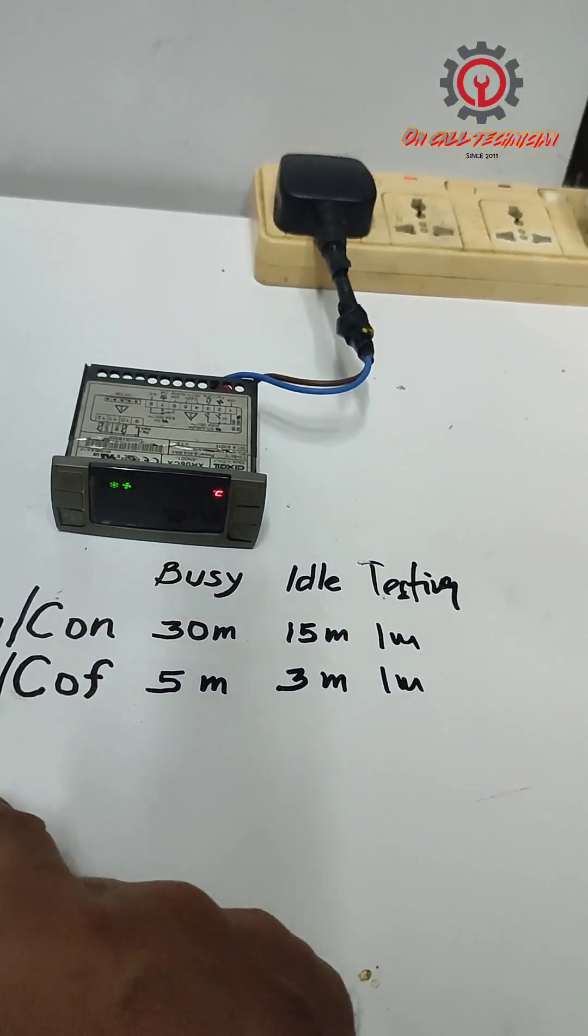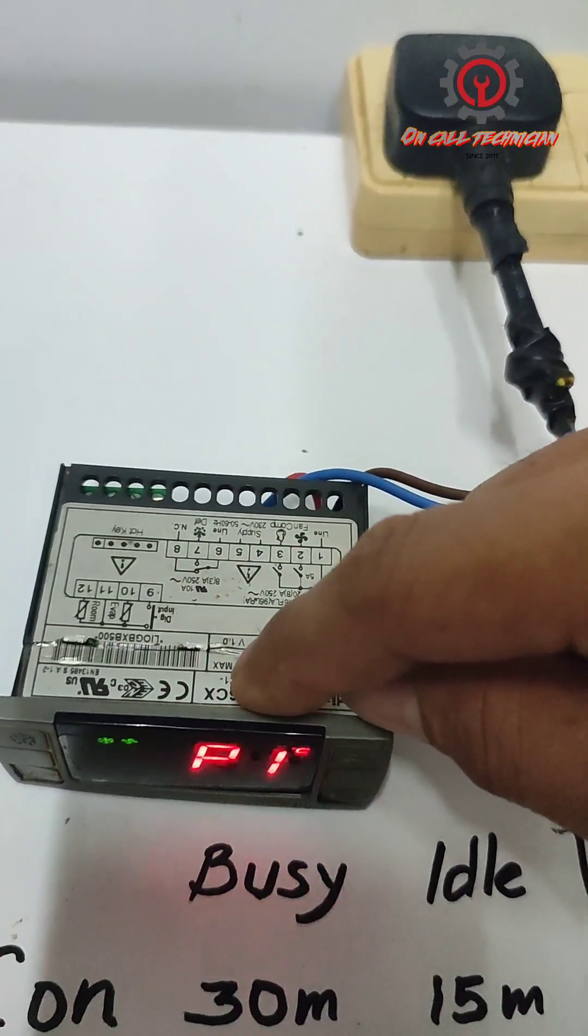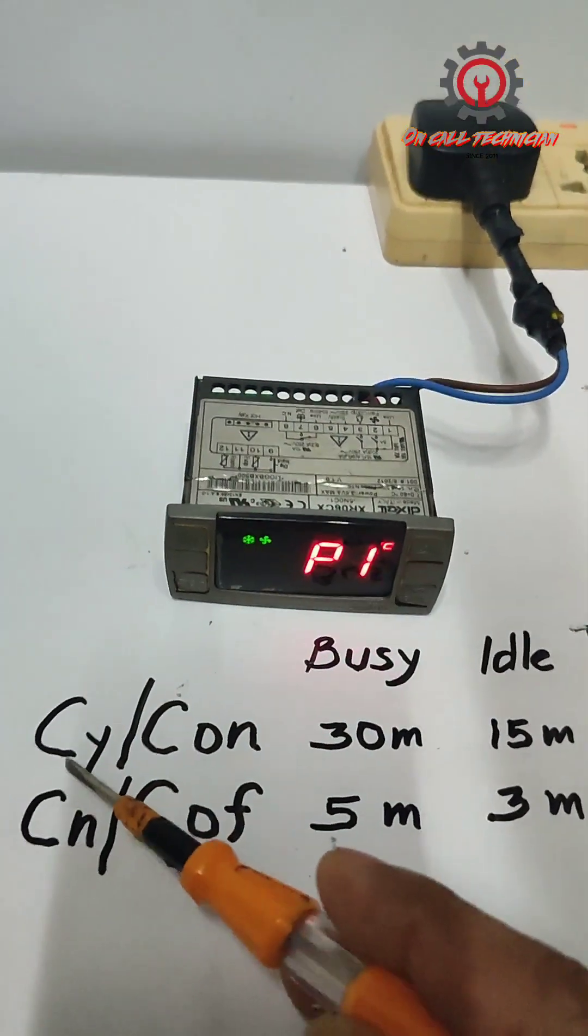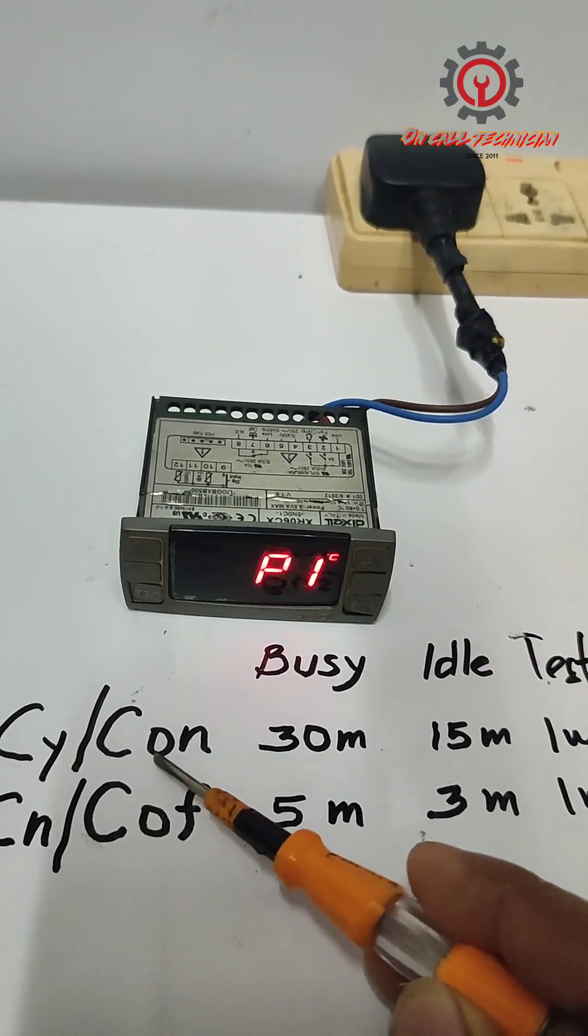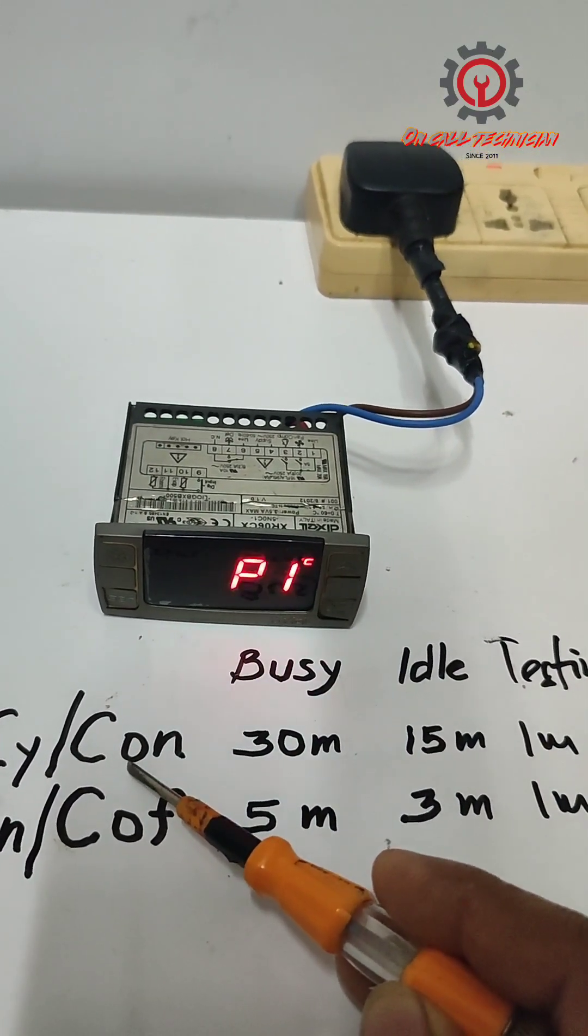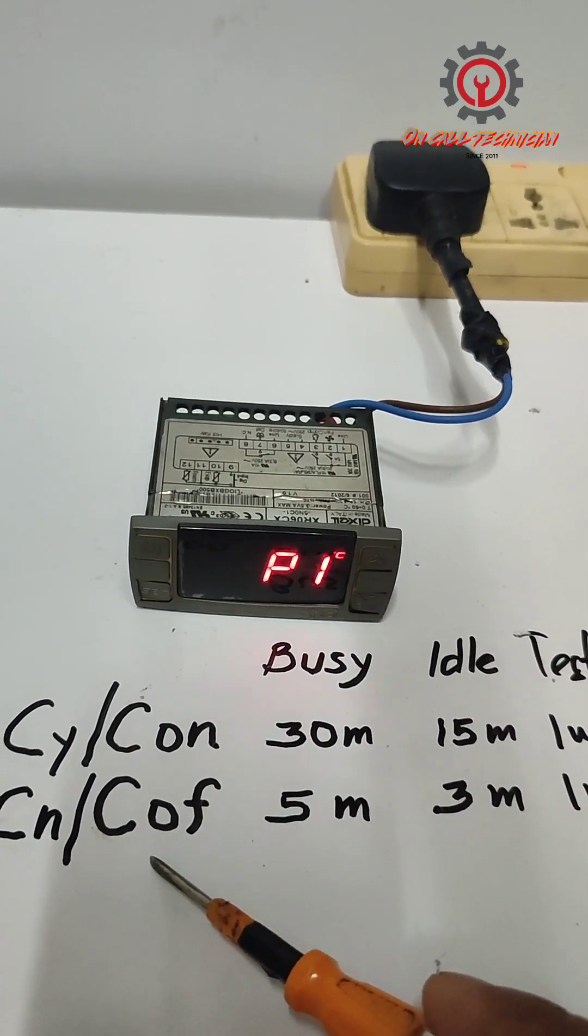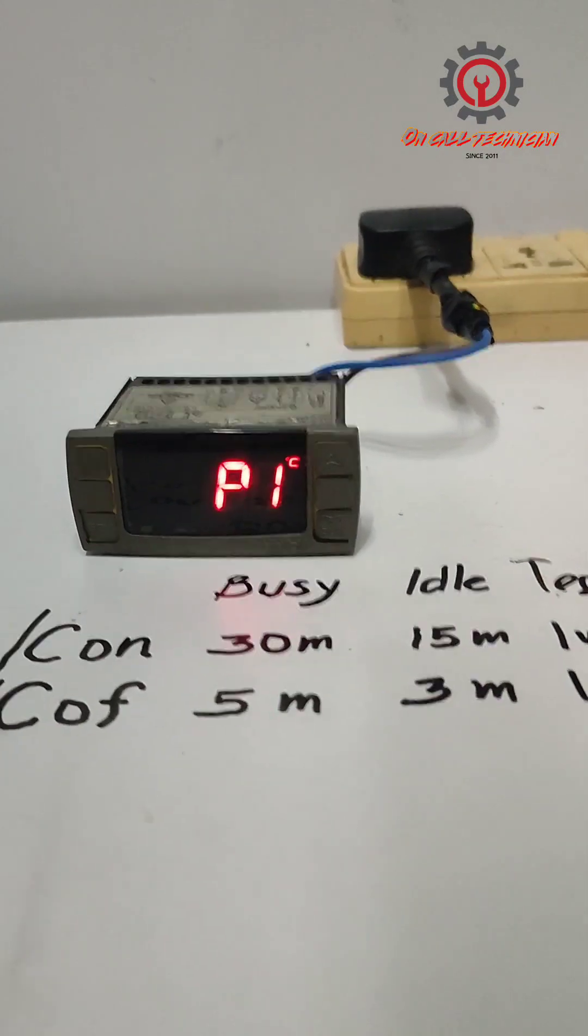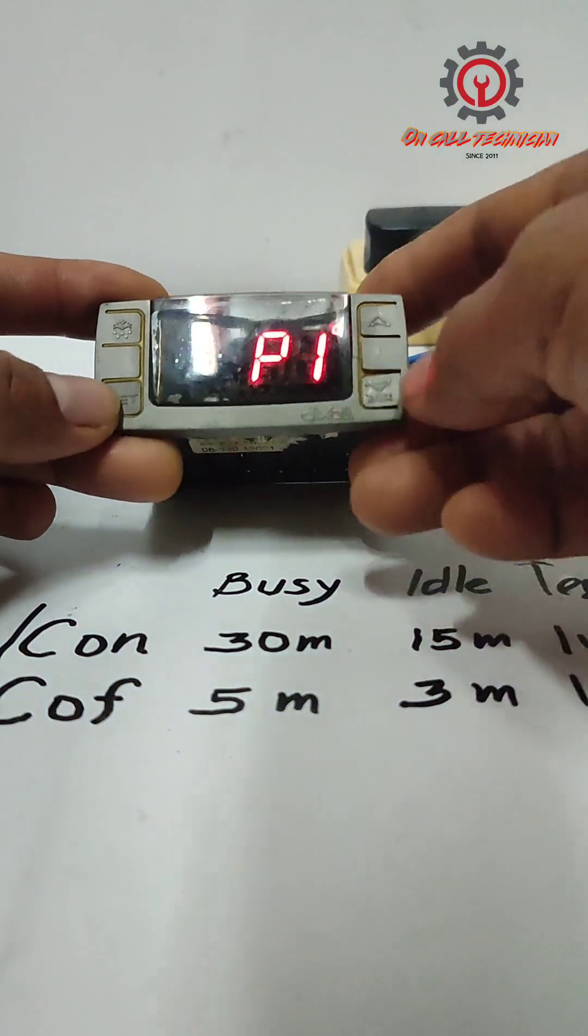The model I use here is 0XR06CX and the parameter for that is CY and C on. For other models of Dixell it's CN and C off for the cut off.